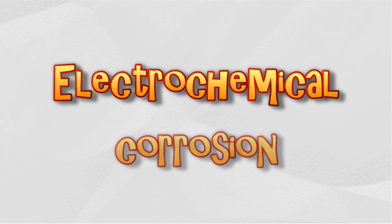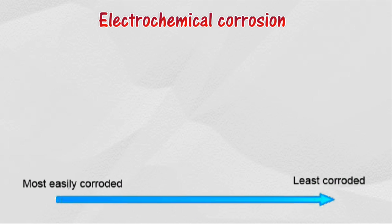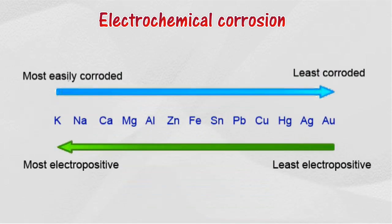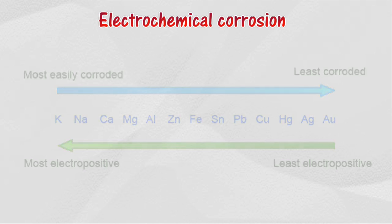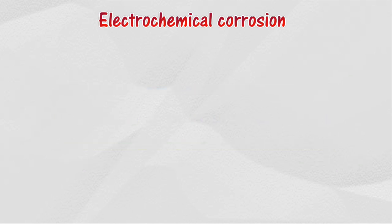Electrochemical corrosion is a process that occurs when two metals with different electropositivity come into contact with an electrolyte. It is a redox reaction in which oxidation and reduction occur simultaneously. When two metals with different electropositivity come into contact in the presence of an electrolyte, the more electropositive metal is corroded.